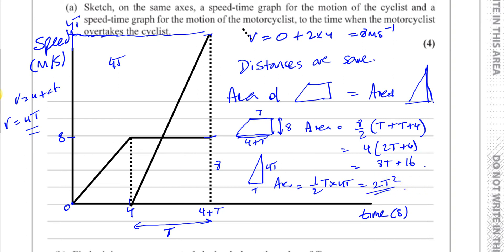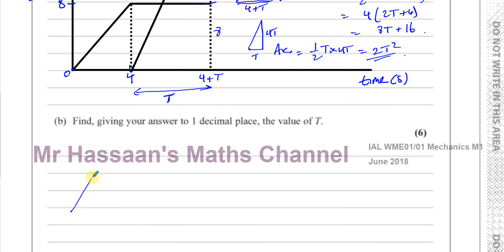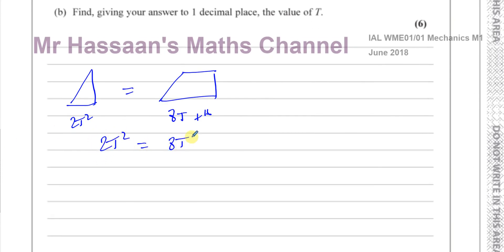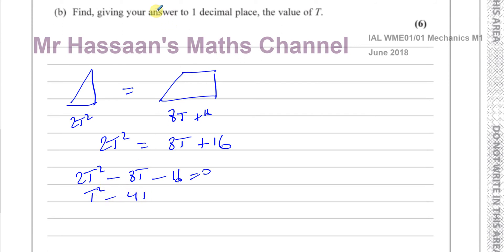Setting the two areas equal gives us: 2T² = 8T + 16. Rearranging: 2T² − 8T − 16 = 0. Dividing everything by 2 gives the quadratic T² − 4T − 8 = 0.